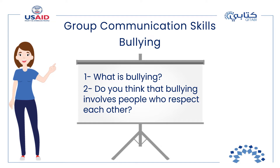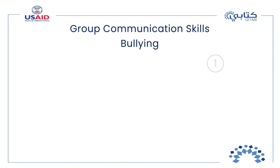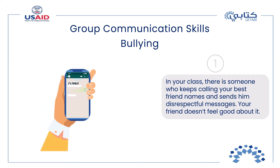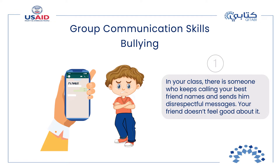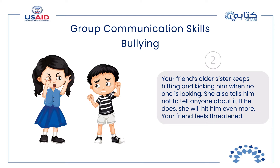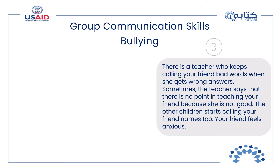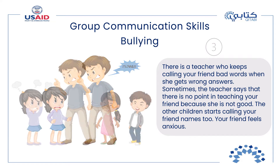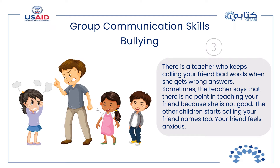Take your time to read these three scenarios. One: in your class, there is someone who keeps calling your best friend names and sends him disrespectful messages — your friend doesn't feel good about it. Two: your friend's older sister keeps hitting and kicking him when no one is looking, and tells him not to tell anyone or she will hit him even more — your friend feels threatened. Three: a teacher keeps calling your friend bad words when she gets wrong answers, sometimes saying there is no point in teaching her; the other children start calling your friend names too, and your friend feels anxious.